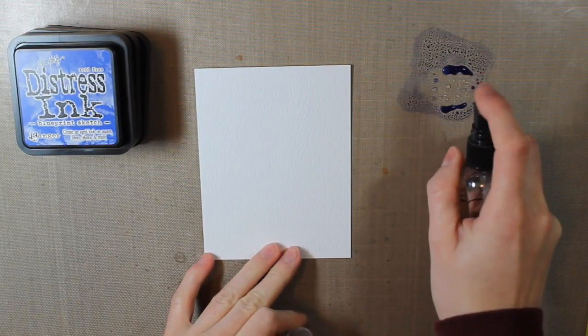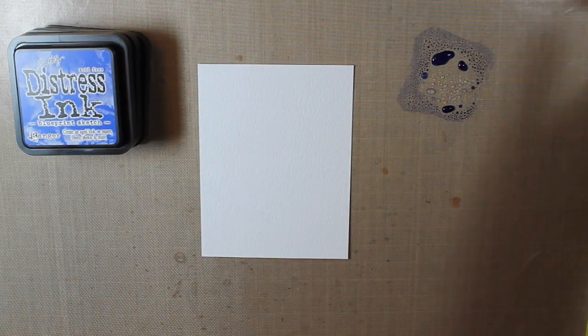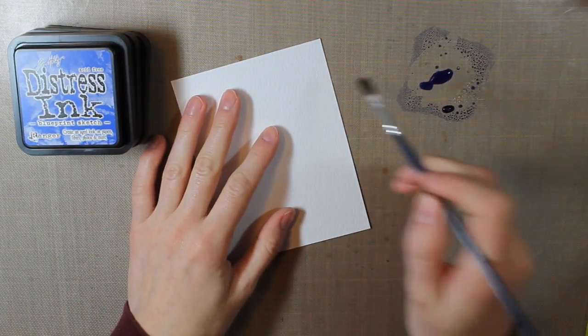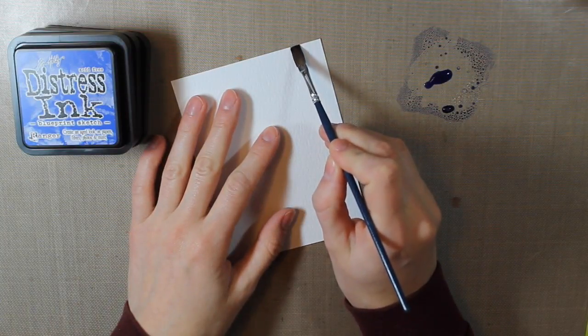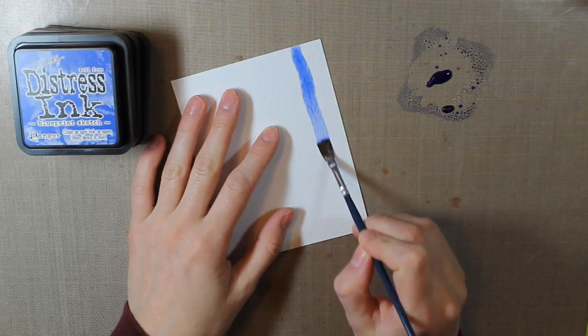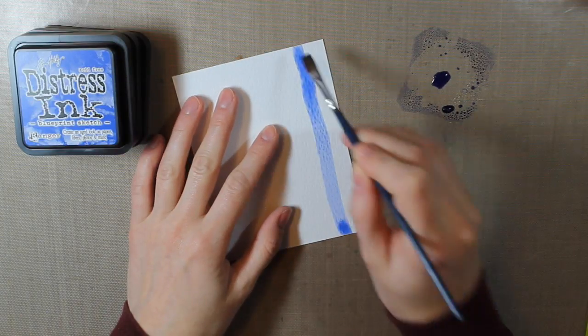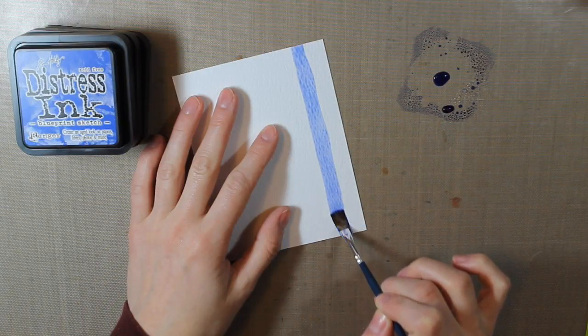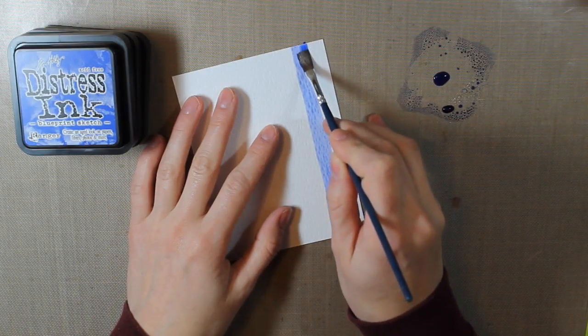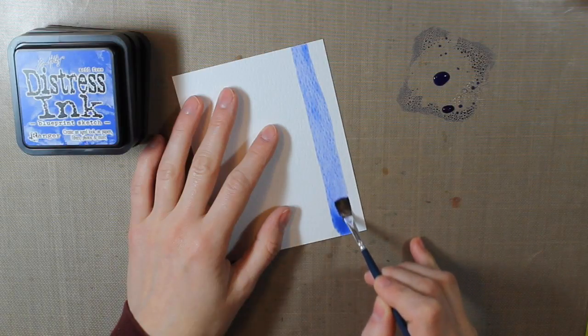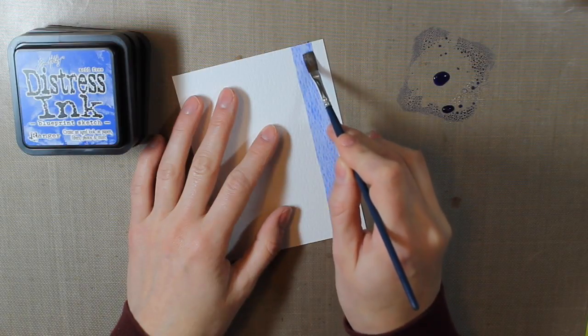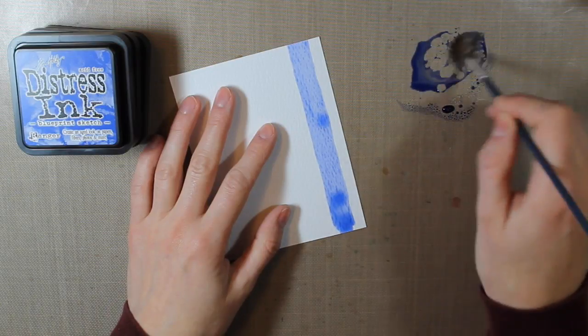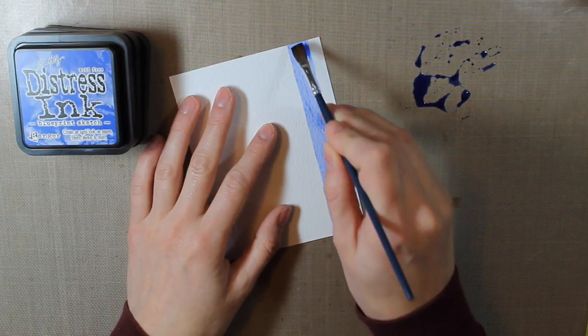So I have my watercolor cardstock and I put a little bit of the Blueprint Sketch Distress Ink on my non-stick craft sheet and then squirted it with water. And then I'm taking a thicker paintbrush and I'm just drawing lines all the way down the sheet. Now these aren't necessarily straight and that's kind of the fun of creating your own background and creating a plaid is that they're all different. So I'm just trying to straighten these out as best as I can but it's okay if they're a little bit crooked because that just adds to the handmade part.